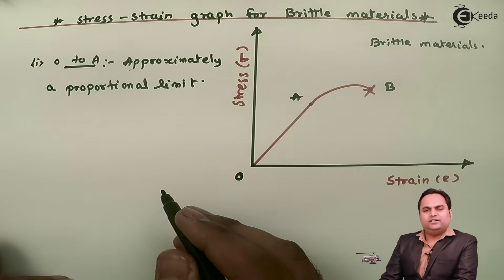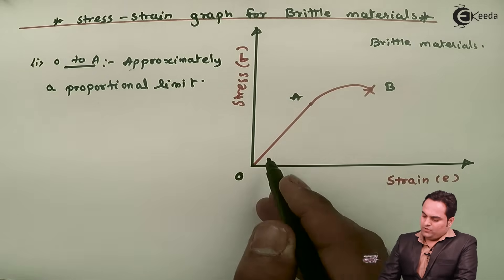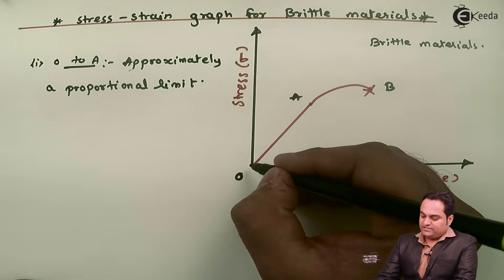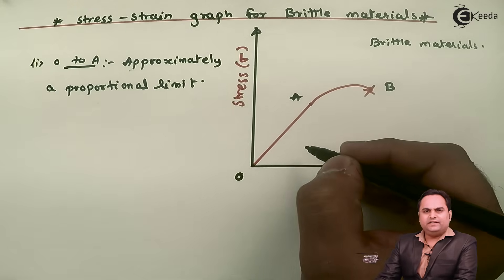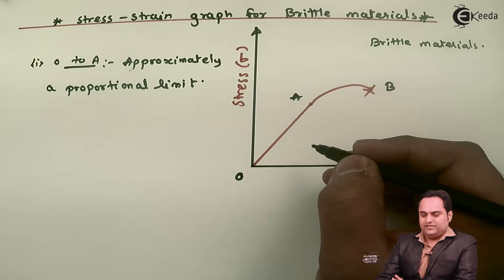If stress increases, strain may or may not increase in brittle materials. From O to A, once we cross from A to B, we have a curve.